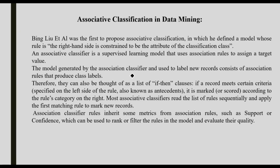Associative Classification: if a record meets certain criteria, it is marked according to the rule's category on the right-hand side — a left-hand-side to right-hand-side rule based on what classification class is. Association classifier rules inherit some metrics from association rules such as support and confidence. Our Apriori algorithm is used for association rule mining, and that rule is related to this topic using support and confidence to filter it.